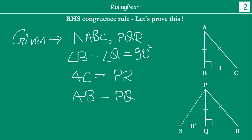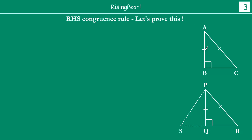Now our strategy will be: first, prove that triangles ABC and PQS are congruent. Once we do that, we can show that angle ACB equals angle S. Then we look at triangle PSR and find how the angles in that triangle are related. After that, we compare triangles ABC and PQR. This will be a slightly lengthy proof, so we will go step by step.